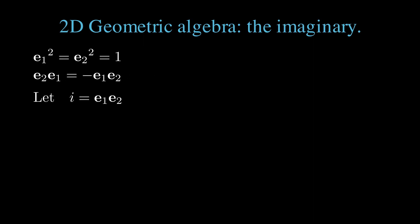To show this, we write out the square. i squared equals e1 times e2 times e1 times e2. We can change the order of the first vector product, also flipping the sign. Then regroup to find e1 times e1 equals 1, leaving us with minus e2 times e2, which is minus 1, as claimed.